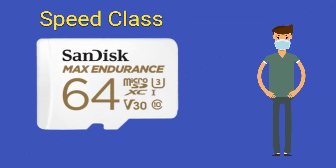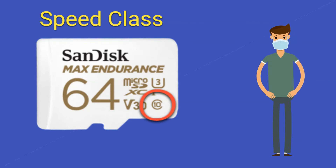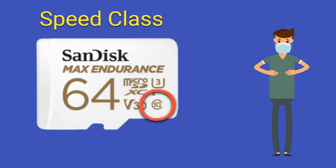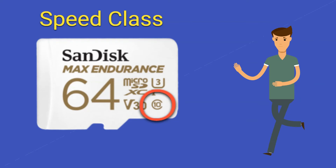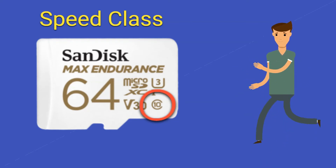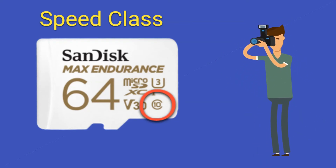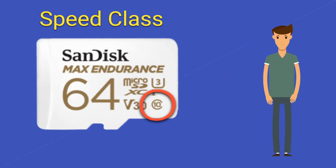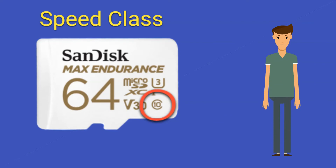This specification is represented on the card as a number inside the letter C. It represents the minimum write speed and is most important to those shooting videos or very large images in succession, i.e. burst mode. There are 4 classes: 2, 4, 6, and 10. The number represents the minimum sustained megabytes per second write speed. The higher the number, the faster the sustained speed.